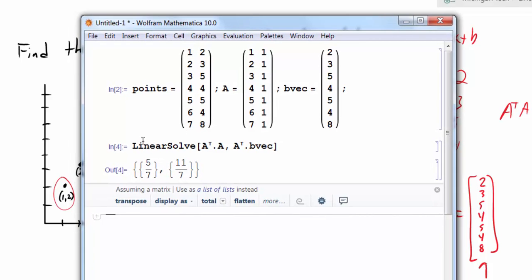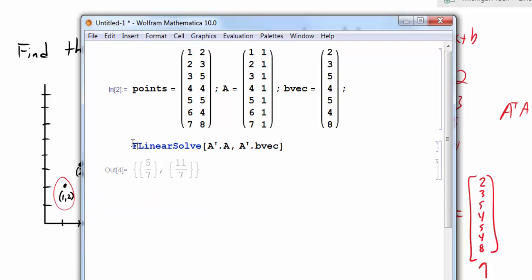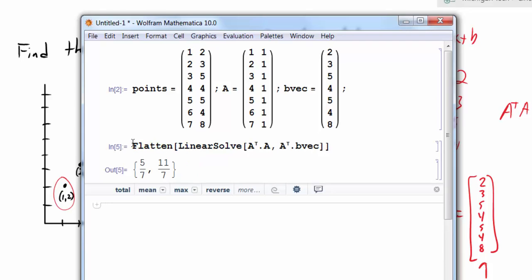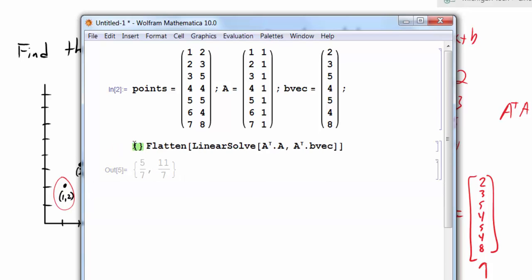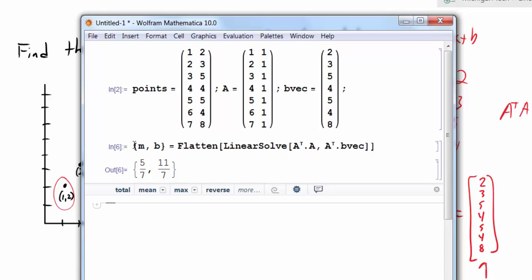Now I'd like to use those values. But I don't really like that it's outputting as a list of these two lists of one point. So what I'm going to do is flatten the result. Now this is going to remove one layer of those brackets. And I'm going to store these values as my m value and my b value for my line. And I want to see if this is really giving me what I expect.